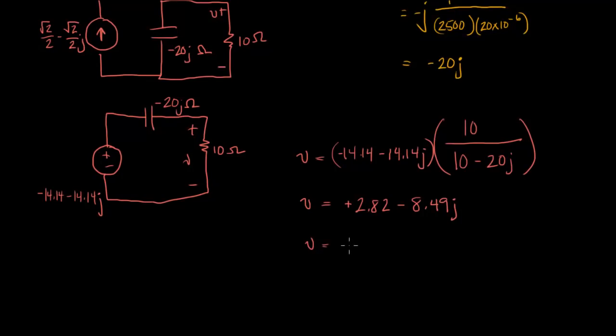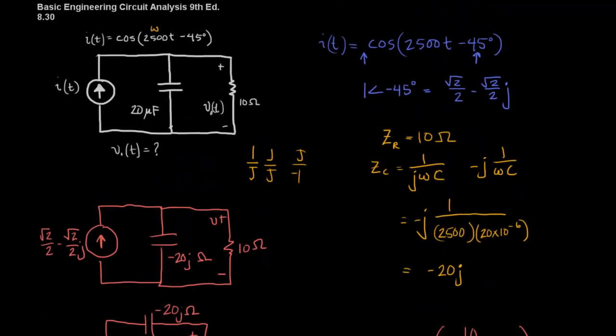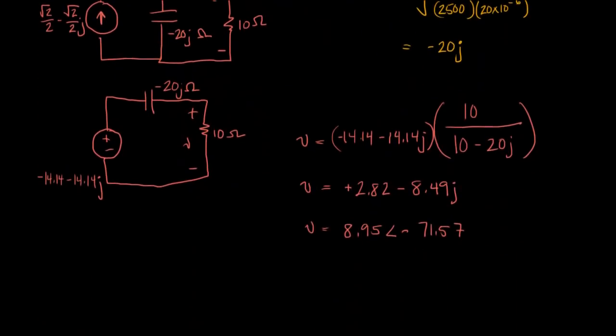So that's 8.95 at an angle of negative 71.57. So to convert that back into the time domain, I'm just going to simply use the original equation and just change the amplitude and the phase shift. So my final answer then is that V of t equals 8.95 cosine of 2500 t minus 71.57.